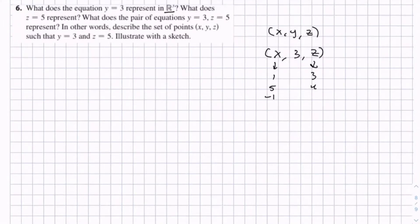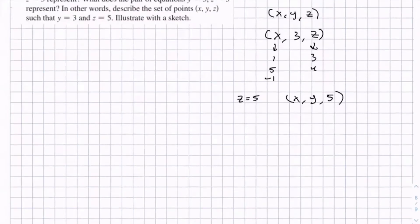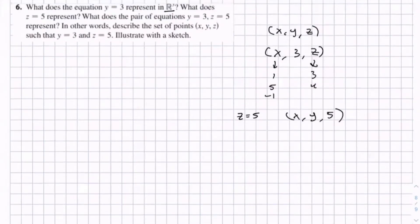And then same with z equals 5. So z equals 5, you have (x, y, 5). And that just creates another plane. This plane is parallel to the x, y plane, and this one's parallel to the x, z plane.